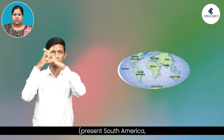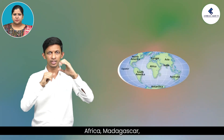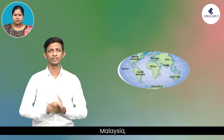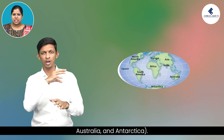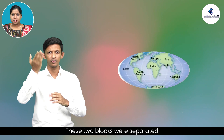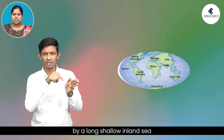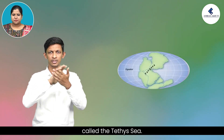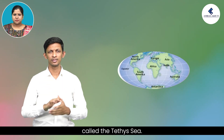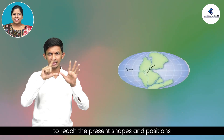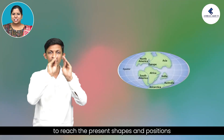Gondwana land comprised South America, Africa, Madagascar, India, Arabia, Malaysia, East Indies, Australia and Antarctica. These two blocks were separated by a long shallow inland sea called the Tethys Sea. It took millions of years for the continents to reach their present shapes and positions on the globe.